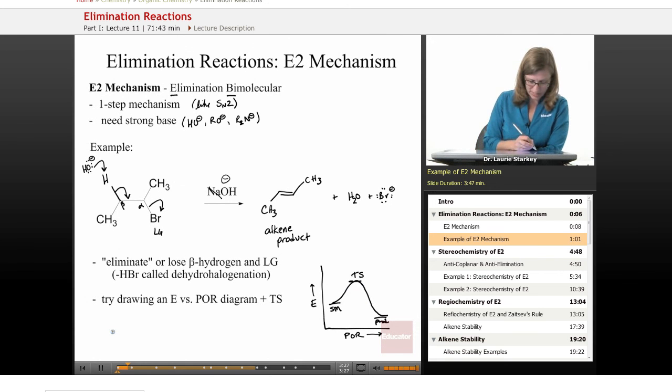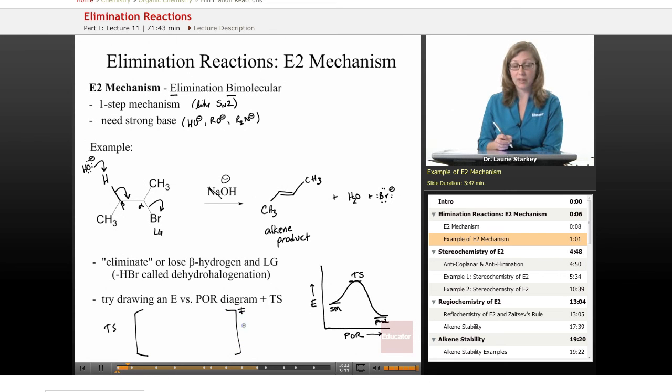And what does the transition state look like? The transition state has a lot of bonding changes taking place in a single step. First of all, we're forming a new bond between the hydroxide and the hydrogen. So forming bonds, we show as partial bonds in the transition state. We're also breaking this carbon-hydrogen bond. So breaking bonds, we're going to draw as a partial bond in the transition state.